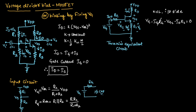Here, Ig·Rg will be equal to 0 since Ig is assumed to be 0. So we can write Vg minus Vgs minus Vs equals 0, where in place of Id·Rs we have written Vs. From the above equation, we can write Vgs is equal to Vg minus Vs. This is the expression for input voltage.